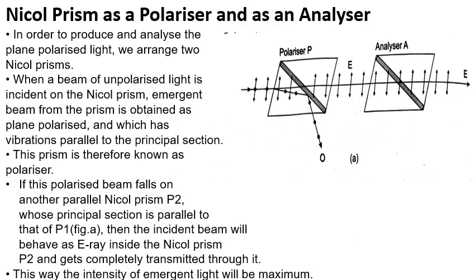To produce and analyze plane polarized light, two Nicol prisms are arranged. When a beam of unpolarized light is incident on the first Nicol prism, the emergent beam is plane polarized with vibrations parallel to the principal section. This prism is known as the polarizer.